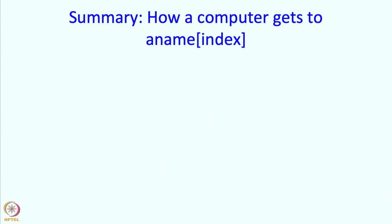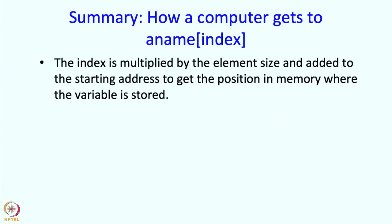So how a computer gets to aname of index: the index is multiplied by the element size and added to the starting address to get the position in memory where the variable is stored. Whenever you write aname of index, that variable which you got to by doing this address calculation is the one which is considered the result of evaluating this expression.